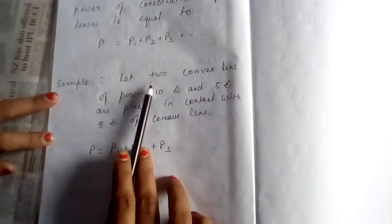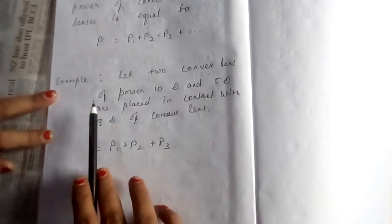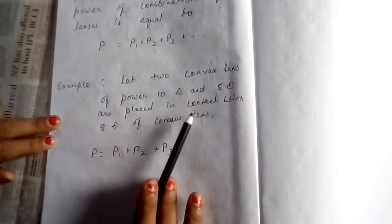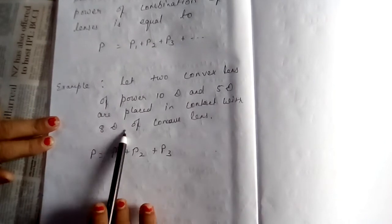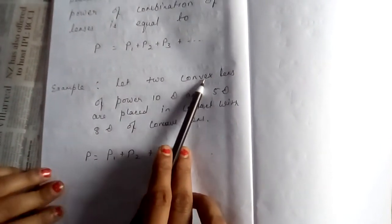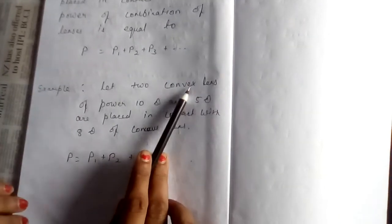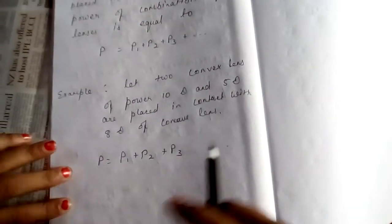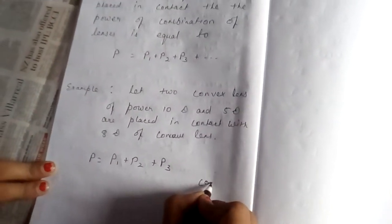Here you see, one example I have considered. Let 2 convex lens of power 10 diopter and 5 diopter are placed in contact with 8 diopter of concave lens. So, convex lens, convex lens power is positive because it is producing, what is your convex lens?